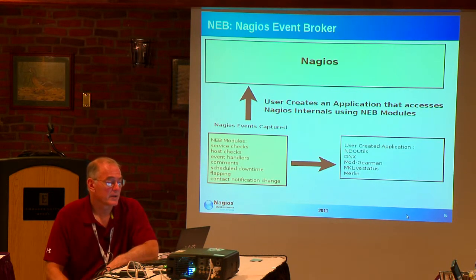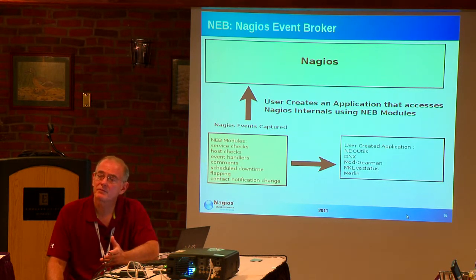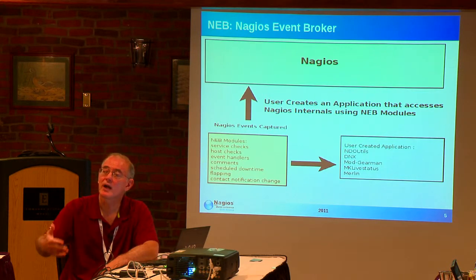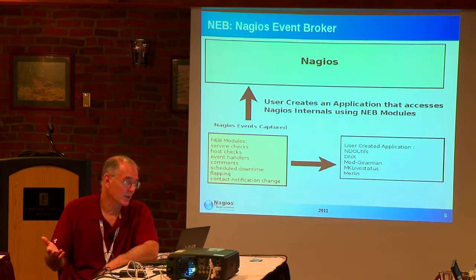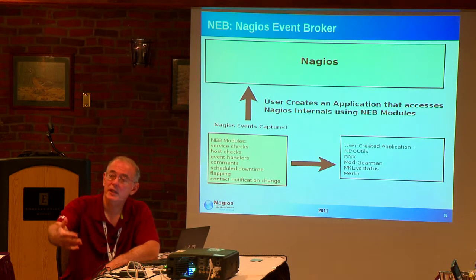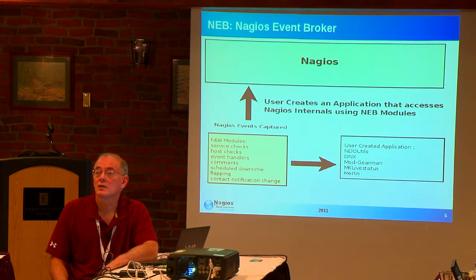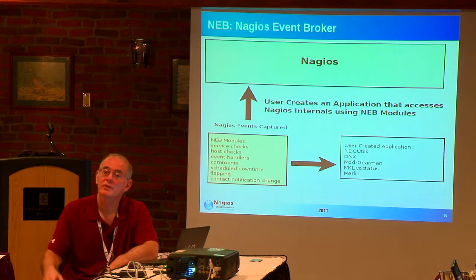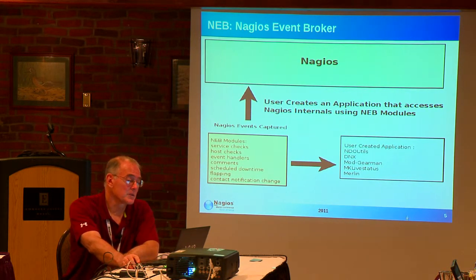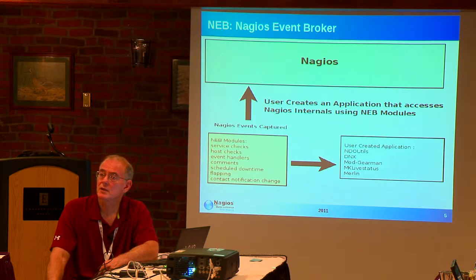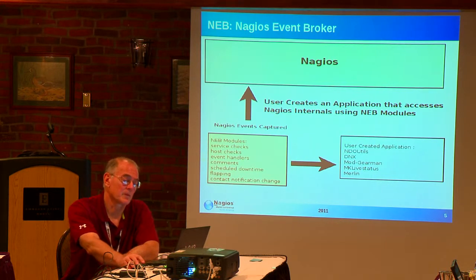Mod Gearman uses the Nagios Event Broker. If you've used Nagios Core or XI, you're familiar with the Event Broker concept — it's a way for an application to pull data out of Nagios. There are about 30 different things it can pull from Nagios, including service checks, host checks, event handlers, and more. These can be used in applications like NDO Utils, DNX, Mod Gearman, MK Livestatus, and Merlin — all of which do similar types of things. Digging into Event Brokers becomes an important aspect of scalability.